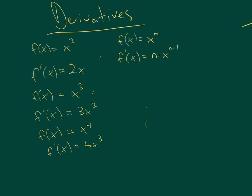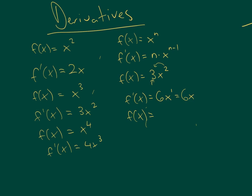What if you have something like f of x equals 3x squared? Well, if you have a constant in front like 3, then you're just going to multiply your exponent into that constant. So the 2 will get multiplied into the 3, making 6x to the 1. You lower the exponent by 1, so that would just be 6x. Or another example, if you have f of x equals 9x cubed, then f prime of x would equal 27x squared, because 3 times 9 is 27. Lower the exponent by 1, you get x squared.